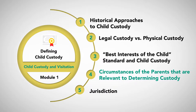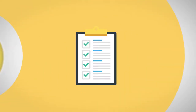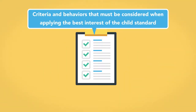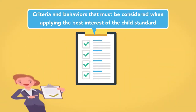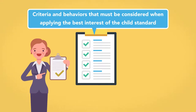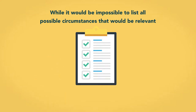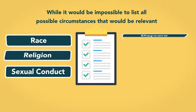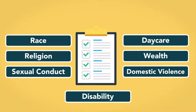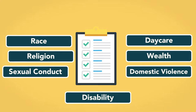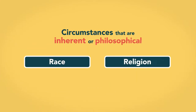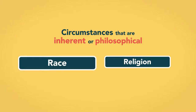There are several examples of criteria and behaviors that must now be considered when applying the best interests of the child standard. While it would be impossible to list all possible relevant circumstances, the following is a discussion of how some specific circumstances are treated. The first category includes circumstances that are inherent or philosophical, such as race and religion.